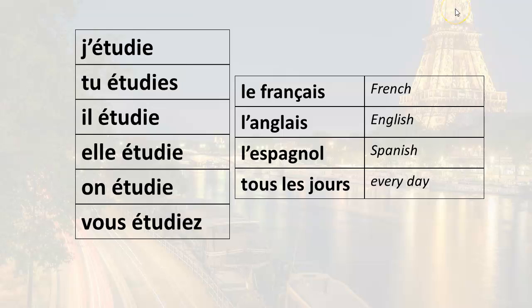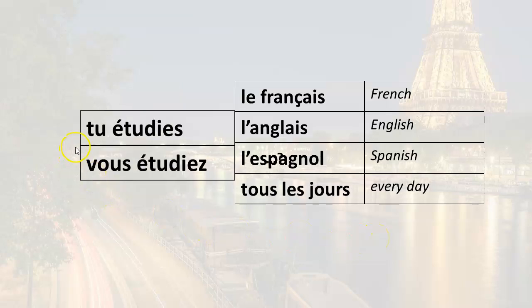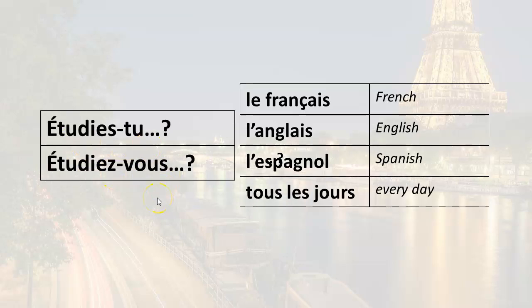Remember, one way to ask a question in French is to reverse the word order — in other words, take the subject pronoun and put it after the conjugated verb. So tu étudie would become étudie-tu, and you have to link them with a hyphen. Vous étudiez, as another example, becomes étudiez-vous. Remember, this is only one way to ask questions; there are some other ways. So let's take those two — tu étudie and vous étudiez — and convert them into questions by reversing the word order and linking them with a hyphen.